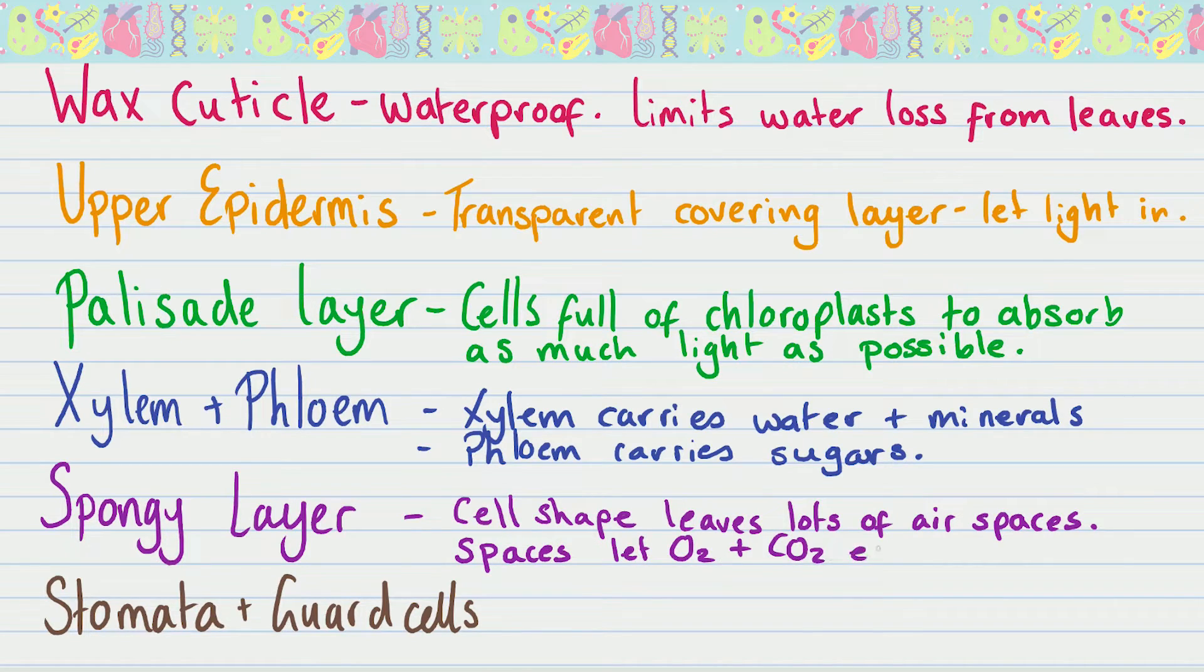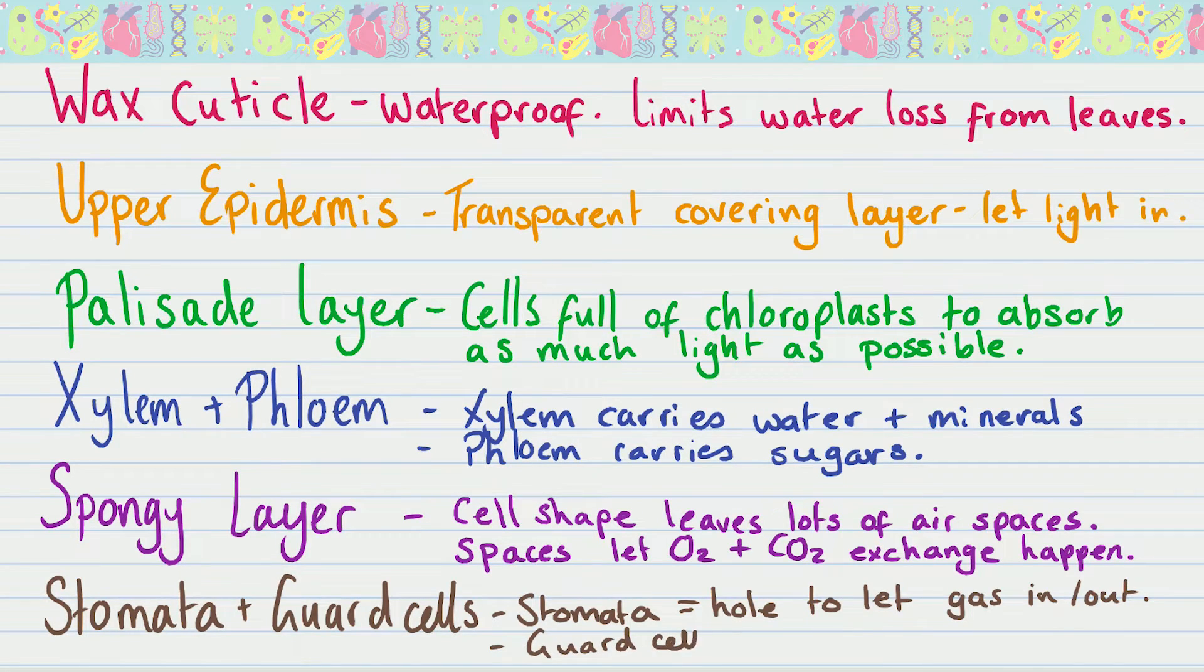Okay, that weird little bundle, the vein, has the xylem and phloem in it. Again, xylem carries water and minerals, phloem carries sugars. People often get them confused so make sure you know the difference. Underneath that you've got the spongy layer. These are the weird sort of oblong-y shaped cells. The most important bit of this layer is the air spaces, not the cells themselves. These air spaces allow oxygen and carbon dioxide to diffuse in and out during gas exchange. Similar to what happens in an alveoli in our lungs.